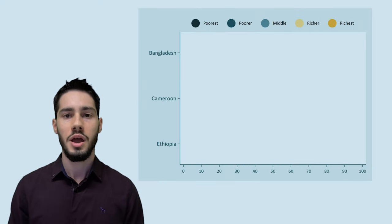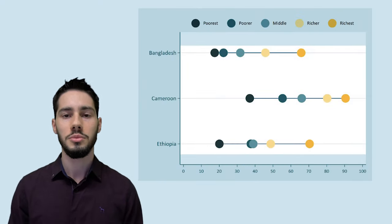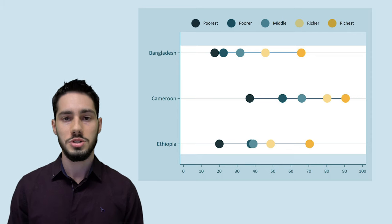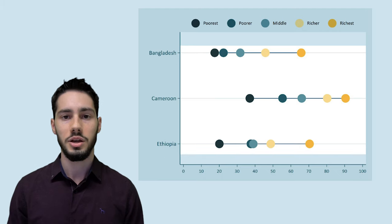But what if we have more than 2 subgroups and we want to consider all of them in our relative measure? One alternative is to use the concentration index, or as we like to call it, the CIX. The CIX is a complex relative measure of inequality that describes how concentrated our outcome is in each group of our ranking variable.